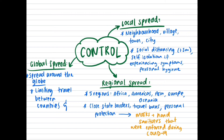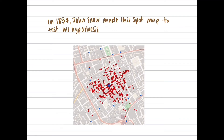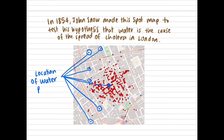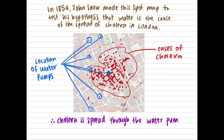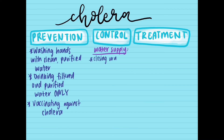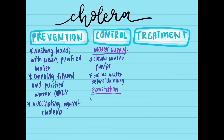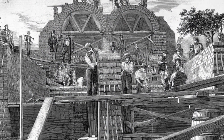Isolation in hotels for two weeks after traveling was also implemented. During the cholera epidemic in London in 1854, a physician, John Snow, identified the source of infection by mapping the incidence of cholera and the locations of local water pumps. This enabled environmental management methods such as controlling the water supply by closing the water pumps, boiling water before drinking, and chlorinating water. Sanitation methods included disposing of waste safely by developing modern sewage and water treatment systems that killed and removed the bacterium from water.